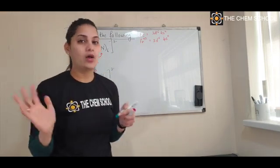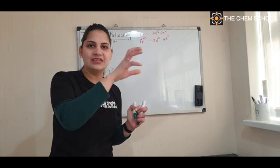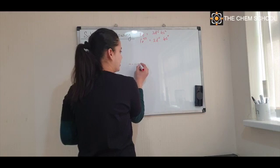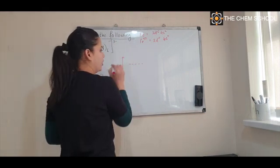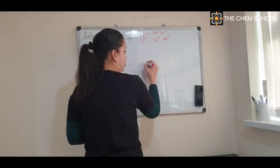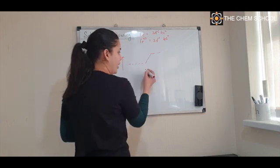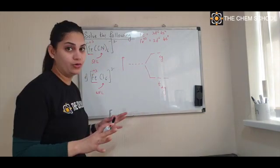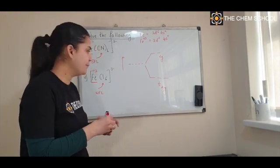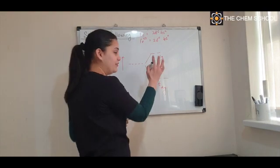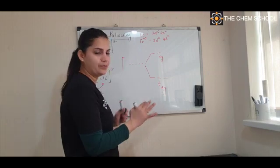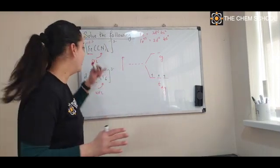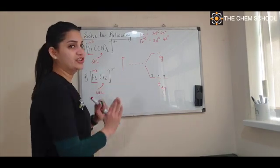Now, just draw the split orbital diagram — you do not need to draw the full degenerate orbital sequence, just the split result. For the octahedral complex, draw EG above and T2G below. Fill 5 electrons: the first three go one each into T2G following Hund's rule — 1, 2, 3. This portion of the diagram is common to both complexes. The difference arises starting with the fourth electron.